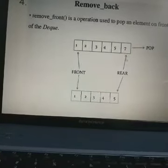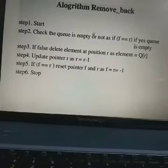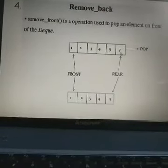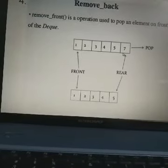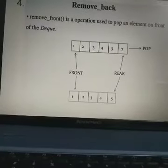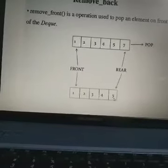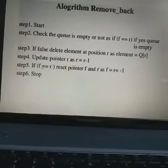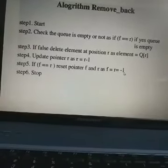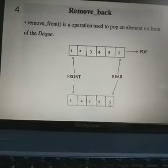Delete the element at position R: element equal to Q[R], where R is the rear part. This indicates the value to be deleted. Then update the pointer R as R minus one. So the value seven is deleted. The last value remaining is five. The rear pointer now indicates the five value. If front equals rear, reset the pointers F and R as F equal to R equal to minus one. Then stop.